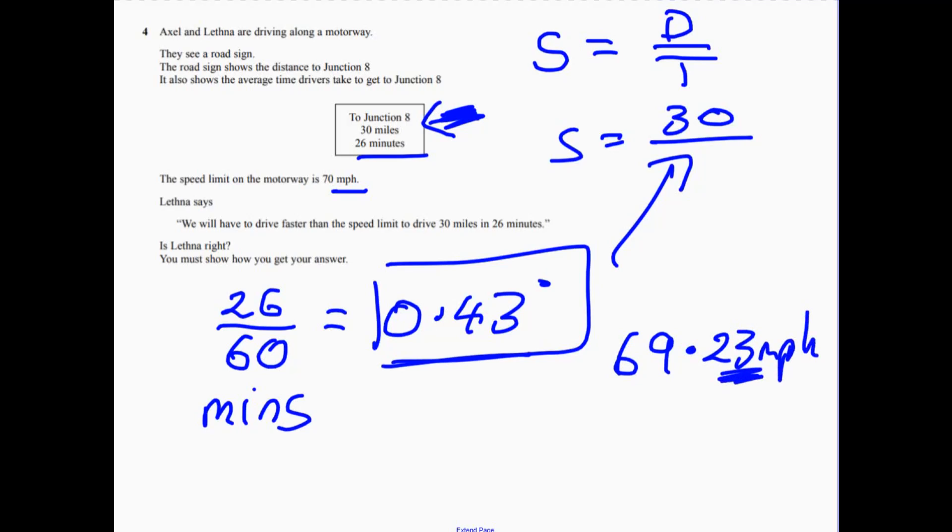Now, 69.23 is less than 70 miles per hour. So make sure that you answer the question. They say will we have to drive faster than the speed limit. So, no. No, you won't. Just got to go at 69.23 miles per hour.